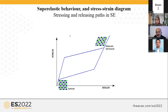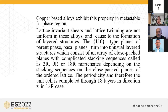This is the stressing and releasing cycle in superelasticity: stressing and releasing parts are different and the hysteresis loop refers to energy dissipation. Copper-based alloys exhibit this property in the metastable beta phase region. Lattice invariant shears and lattice twinning are not uniform in these alloys and lead to the formation of layered structures. One of the type planes of the parent phase turns into an unusual layered structure consisting of an array of close-packed planes with complicated stacking sequences — such as 3R, 9R, or 18R martensites — depending on the stacking sequences on the close-packed planes. The periodicity and unit cell is connected through 18 layers in the z-direction in the case of 18R martensitic structures.